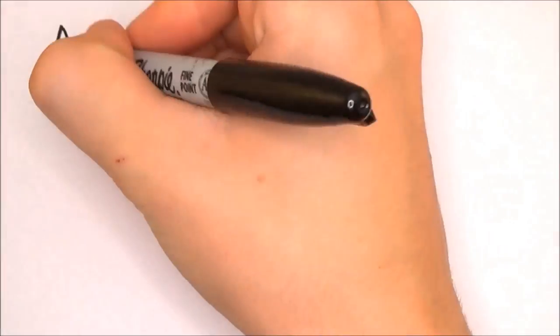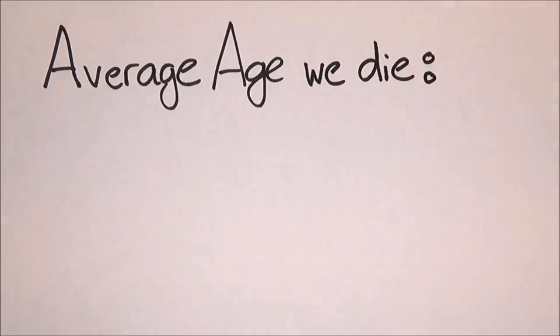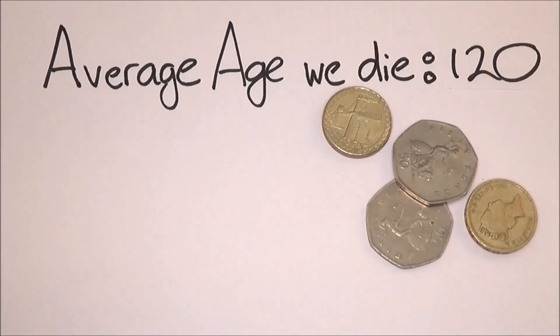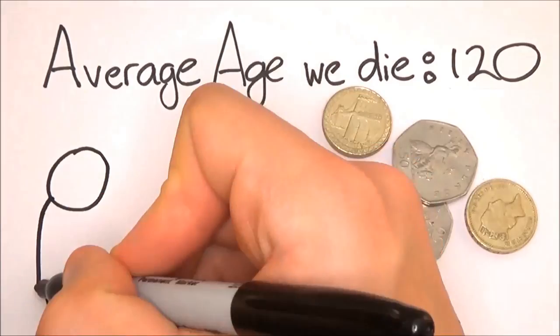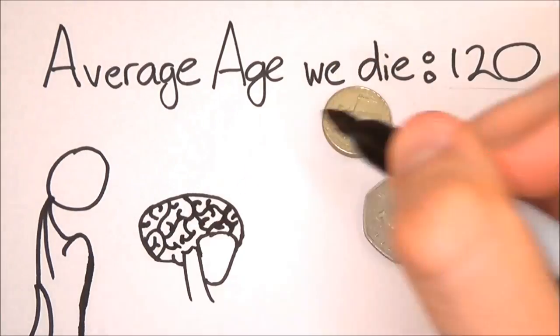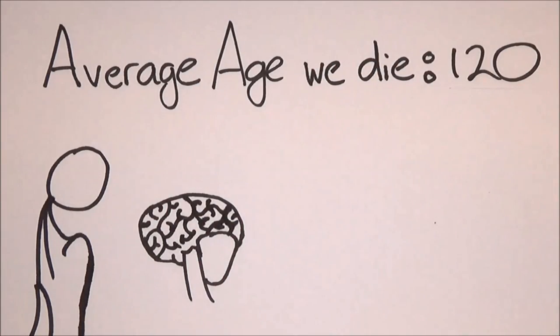The social implications of extending human life are also of great concern. As people live longer and the old outnumber the young, the question of how we pay for the older generation is raised. Retirement ages will need to rise with life expectancy, but that can only be feasible if the mental and physical problems that are associated with old age are defeated, so people can work for longer.